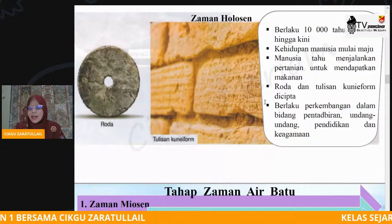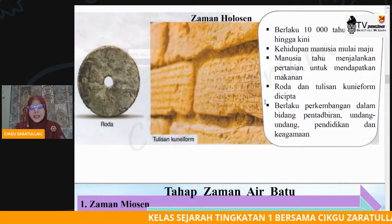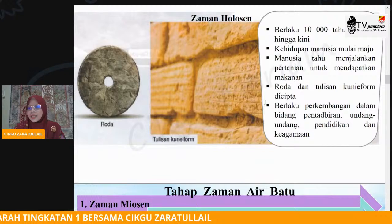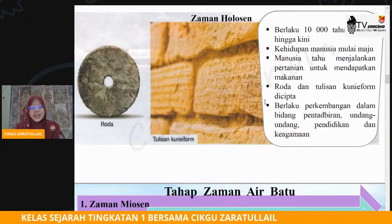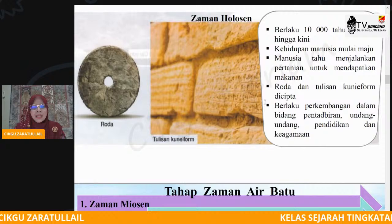Gambaran kedudukan daripada zaman 1, zaman 2, zaman 3 dan zaman 4 menunjukkan berlakunya perubahan dan kemajuan antara satu zaman ke zaman yang seterusnya. Semasa zaman air batu ini — zaman Miosen, zaman Pliosen, zaman Plistosen dan zaman yang keempat zaman Holosen — ternyata bahawa zaman Holosen ini lebih maju.